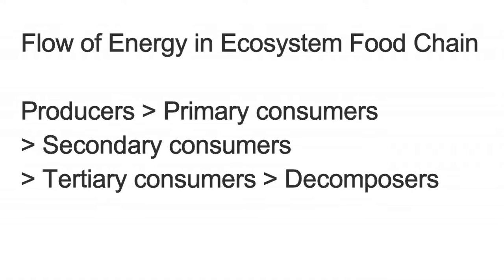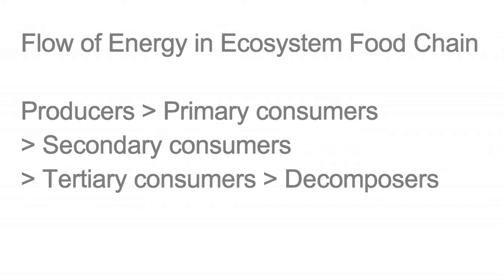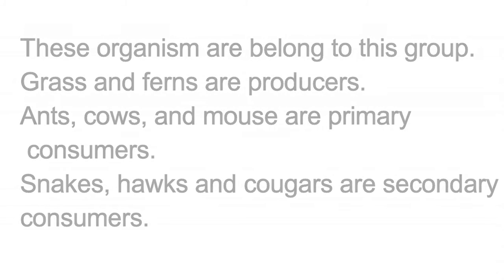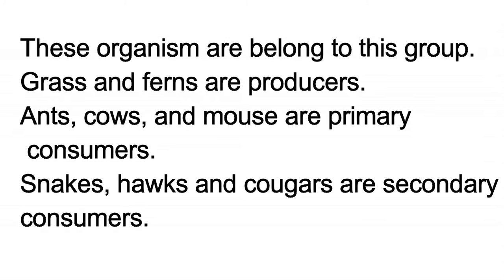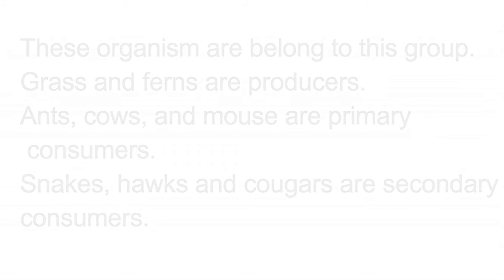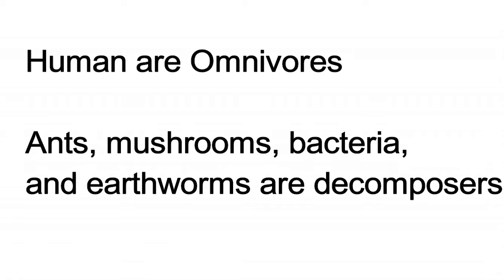Food chain: producers to primary consumers, to secondary consumers, to tertiary consumers, to decomposers. Grass and ferns are producers. Ants, cows, and mice are primary consumers. Snakes, hawks, and cougars are secondary consumers. Humans are omnivores. Ants, mushrooms, bacteria, and earthworms are decomposers.